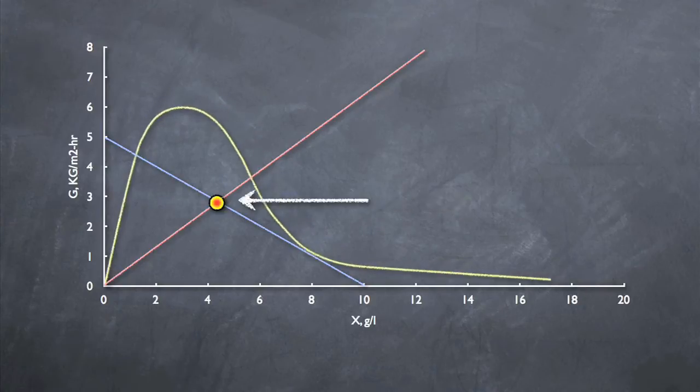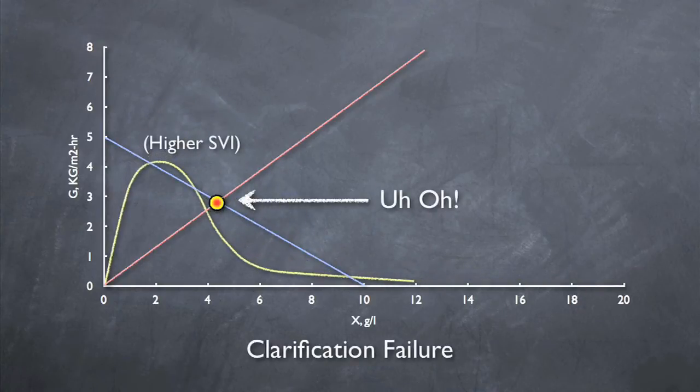If this point falls above the settling curve, the clarifier is failing in clarification. In other words, the solids entering the clarifier don't have enough time to settle before going over the effluent weir. This could be caused by increased flows, not enough RAS flow, a high SVI, or a combination of any of them. It is not a good place to be. At this point, the clarifier is not doing its job at all.